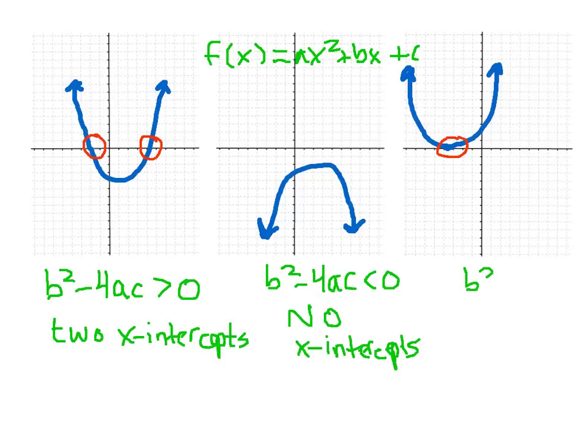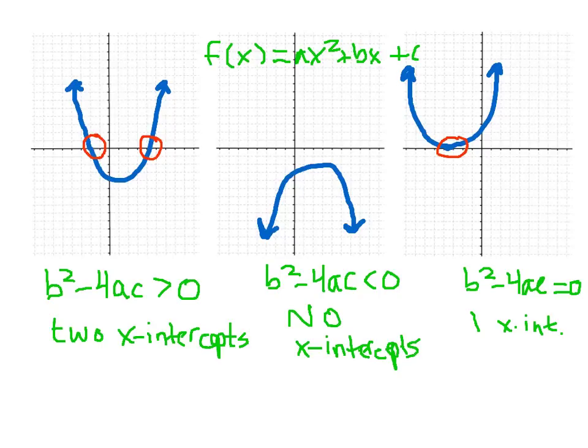And finally, when b squared minus 4ac is equal to zero, then we're going to have one x-intercept. This is because in the quadratic formula, you're adding and subtracting the square root of zero — adding zero and subtracting zero gives you the same answer. So depending on what the discriminant is, that will tell us how many x-intercepts our quadratic function will have.